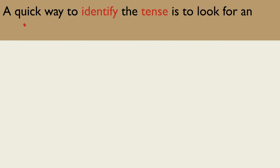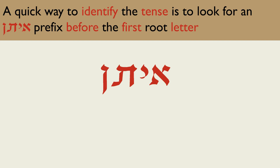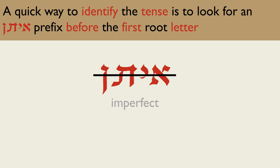A quick way to identify the tense is to look at the first root letter. If there is an Eitan prefix — Aleph, Yud, Tof, or Nun — before the first root letter, the tense is imperfect. This rule always applies if the prefix is Aleph, Yud, or Tof. If the prefix is a Nun, you need to check for a perfect tense suffix. If there is no Eitan prefix in front of the first root letter, the tense is perfect.